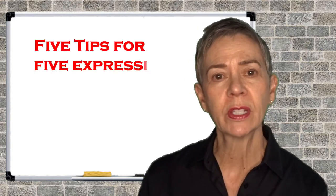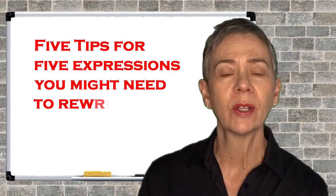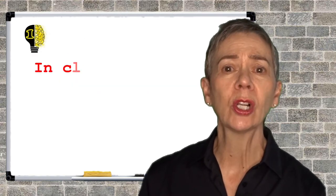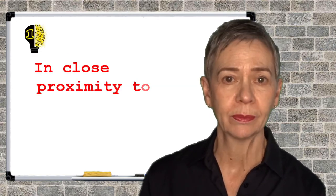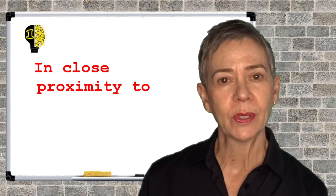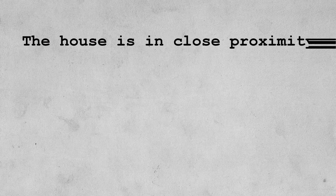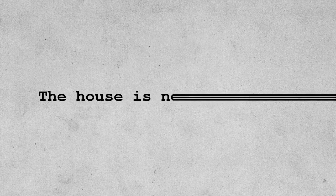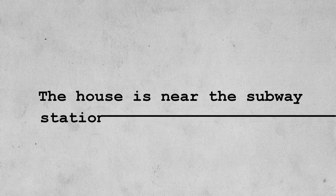Here are my five tips for five expressions you might want to consider rewriting. Example number one is 'in close proximity to.' The house is in close proximity to the subway station. Don't write that. Just write: The house is near the subway station. The rewritten version is much tighter and much clearer.